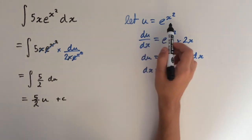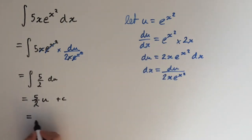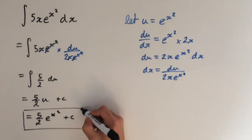Now, last step is just substituting back in for u. So this equals 5 over 2 times e to the x squared plus c. So there you go, integral of 5x times e to the x squared.